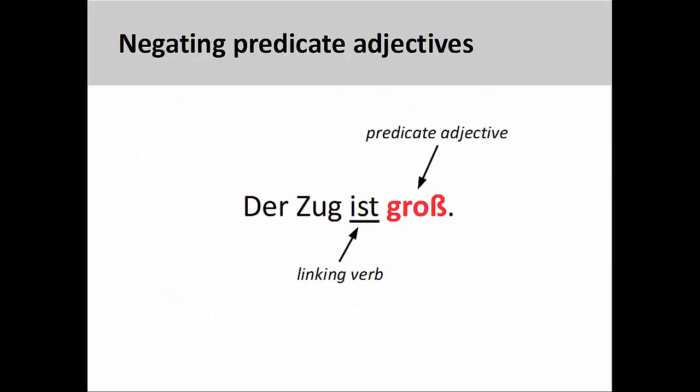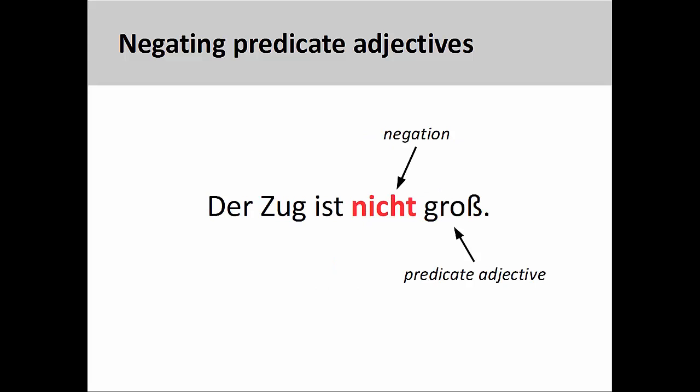In German, the adverb nicht can be used before adjectives and other adverbs to negate them. In the sentence you see here, der Zug ist groß, meaning 'the train is large,' the predicate adjective groß comes after the linking verb and describes a characteristic of the noun. To negate this adjective, we simply need to insert nicht before it: der Zug ist nicht groß — the train is not large.